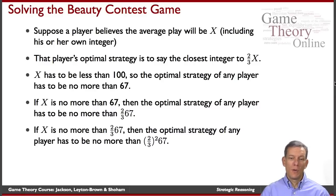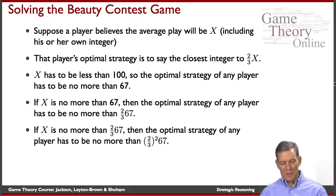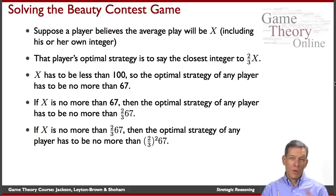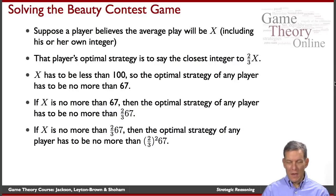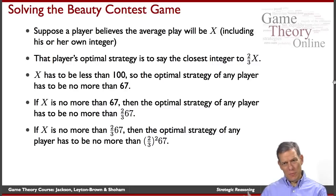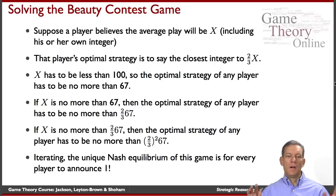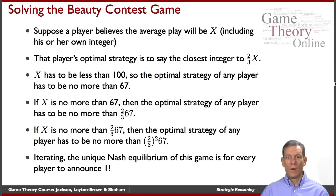We keep going on this, so nobody should be naming anything more than two-thirds of 67. Obviously, everybody's going to want to be a little bit lower than everybody else's guess — wherever the average is, you should be lower than that. What's the only number where everybody can be naming and consistently choosing the best response to what the average guess is? The unique Nash equilibrium of this game is for every player to announce one.